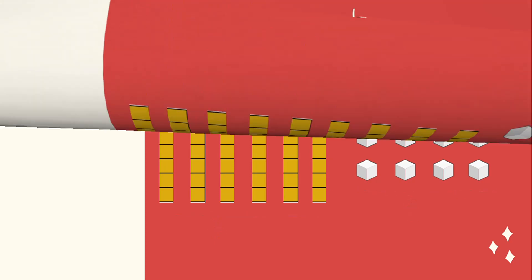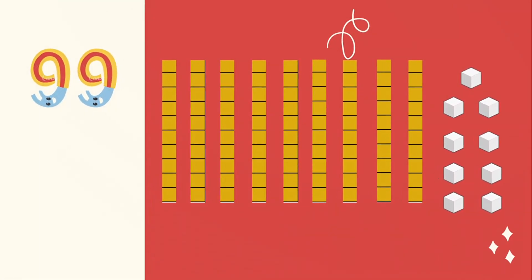Let's see another two digit number — ninety-nine. The numeral 99 has nine rods of tens and nine units of ones. Let's count: 1, 2, 3, 4, 5, 6, 7, 8 and 9. There are nine rods of tens. And 1, 2, 3, 4, 5, 6, 7, 8 and 9. There are nine units of ones.